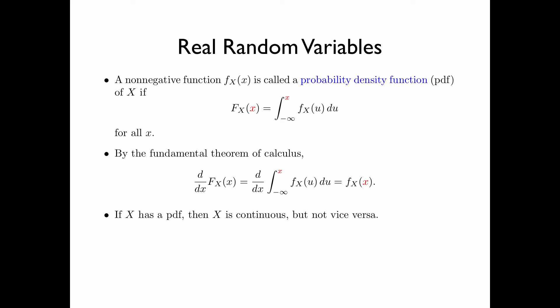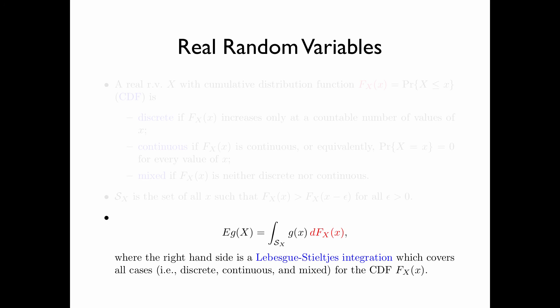If a random variable x has a PDF, then it is necessarily continuous, but not vice versa. This means it is possible for a random variable x to have a continuous CDF, but for the derivative of the CDF to not exist. In the case that the random variable x has a PDF, dF(x) can be written as f(x) dx. For those not familiar with measure theory, you can largely think of dF(x) as f(x) dx, keeping in mind that it represents something more general.